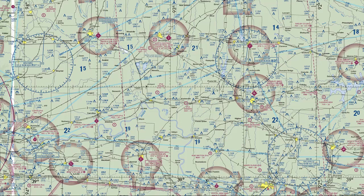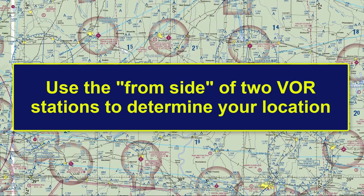If you get lost or you just want to know how far you've gotten on your flight, you can use two VOR stations to help you determine your position. You do this by using the from side of both VORs.